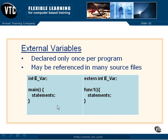Then at link time, when all of these source files have been compiled into object code and everything is linked together, these will be references back to this identifier and this object wherever it is created in memory. So that's an external variable. And we're about to move on into something called scope, which is how long a variable hangs around and how it gets created and where it gets put in memory. So that is really going to tie into this.